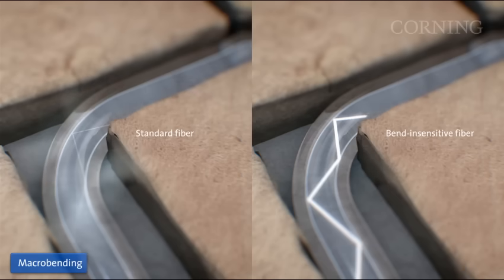Using bend-insensitive fiber like Corning ClearCurve single-mode or multi-mode fiber will greatly reduce the loss caused by macro-bending.